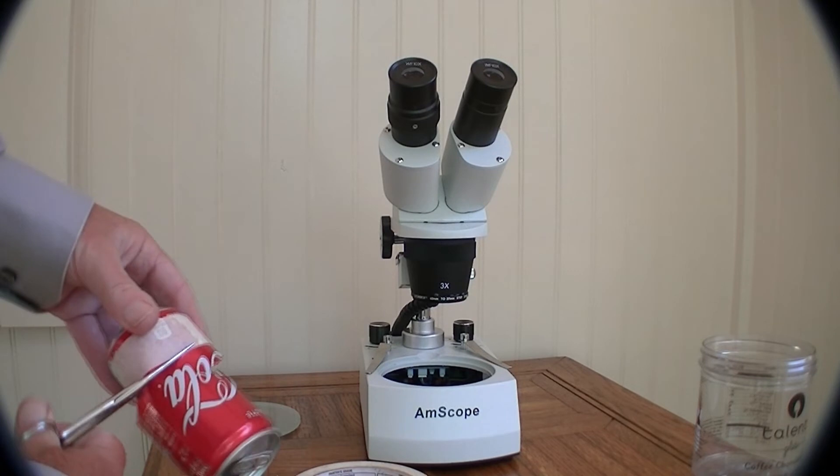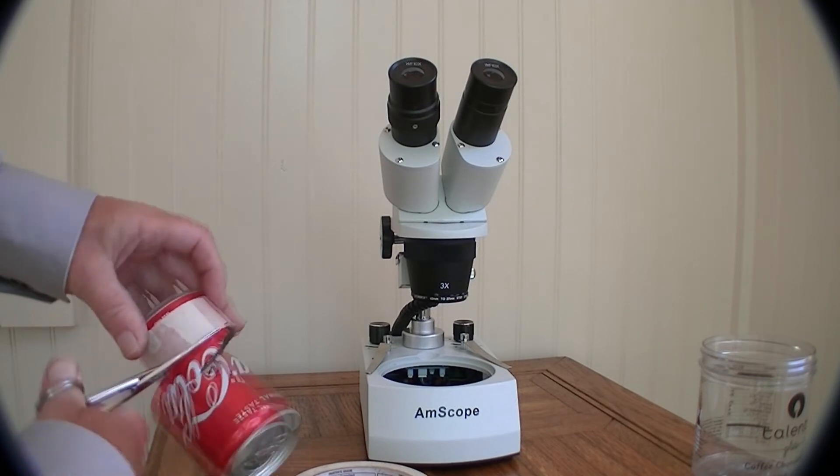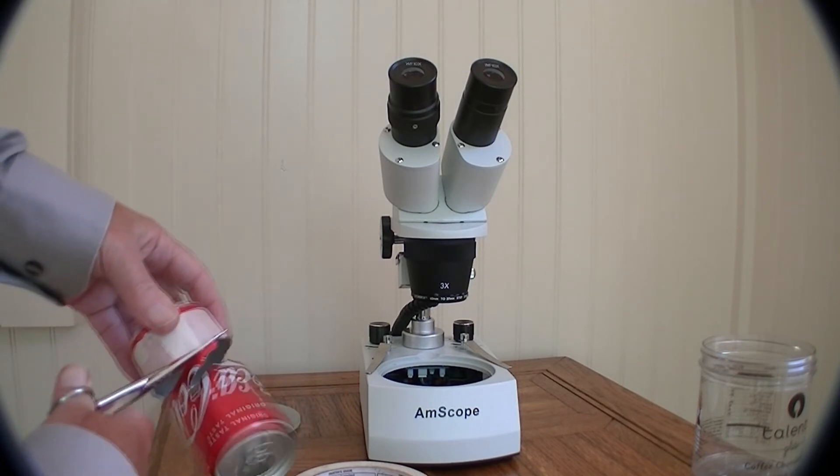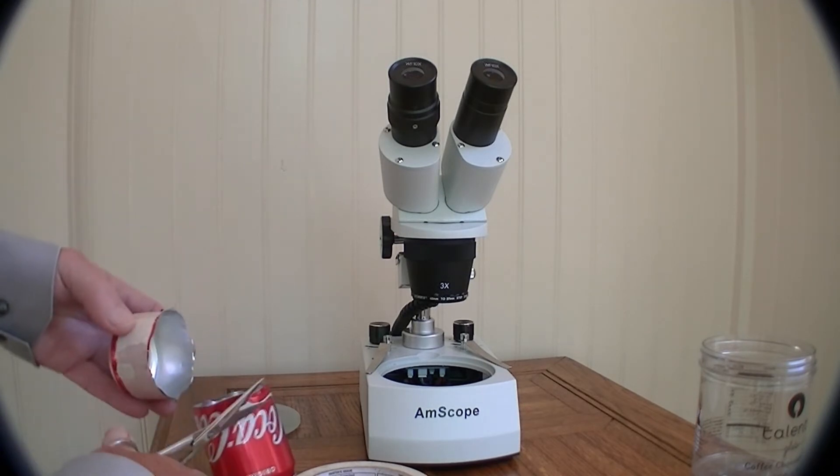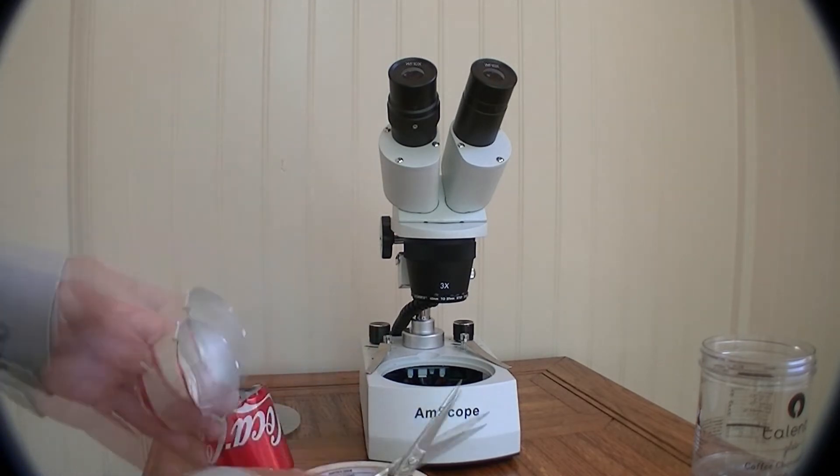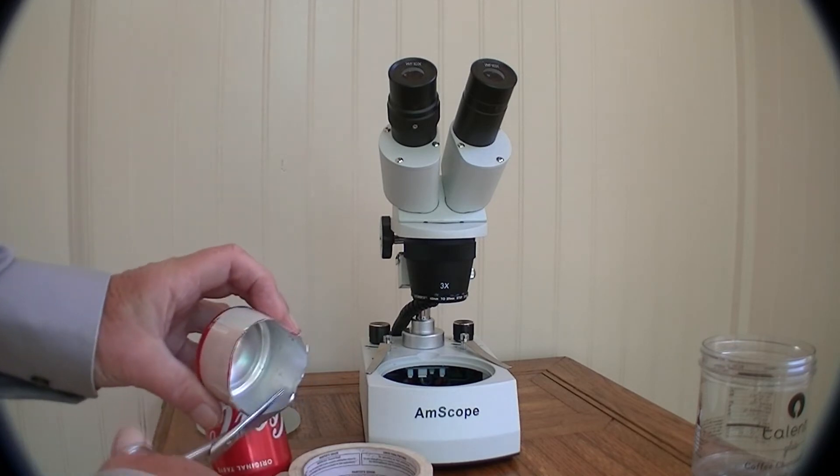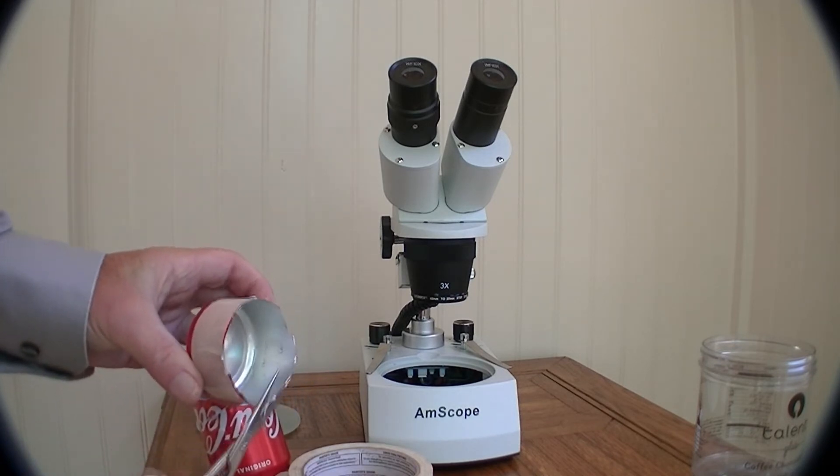Once you've gone round once you can go round and smooth it off. The Coke can can be a bit sharp so be careful. That's our first attempt and now we can clean up and make a nice smooth cut.